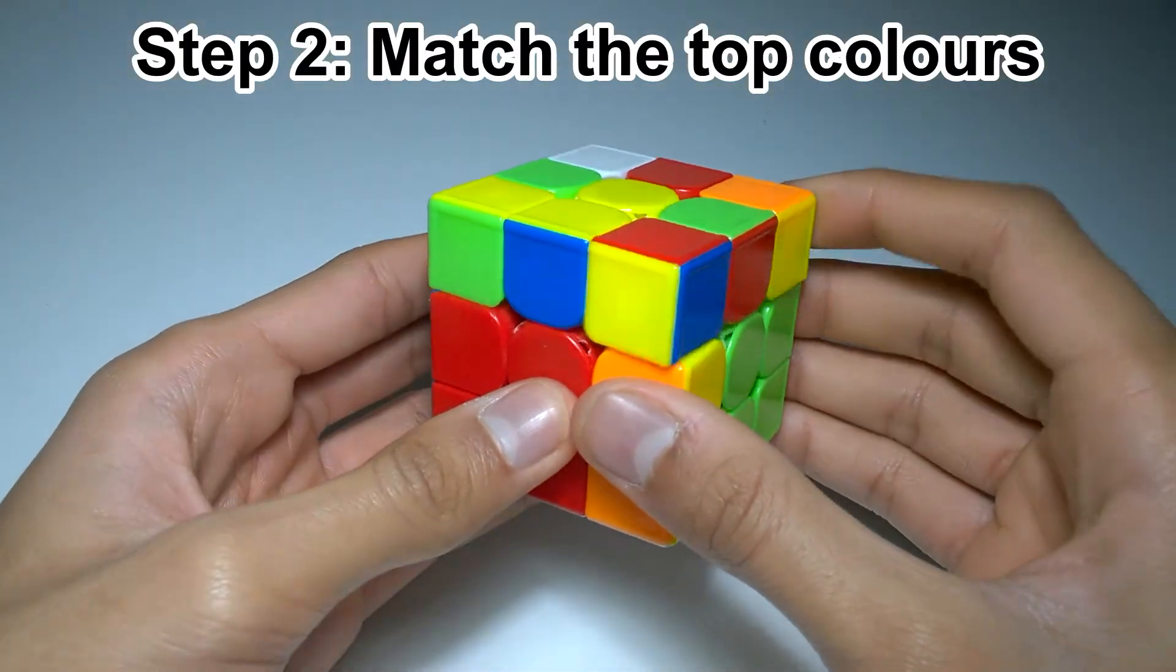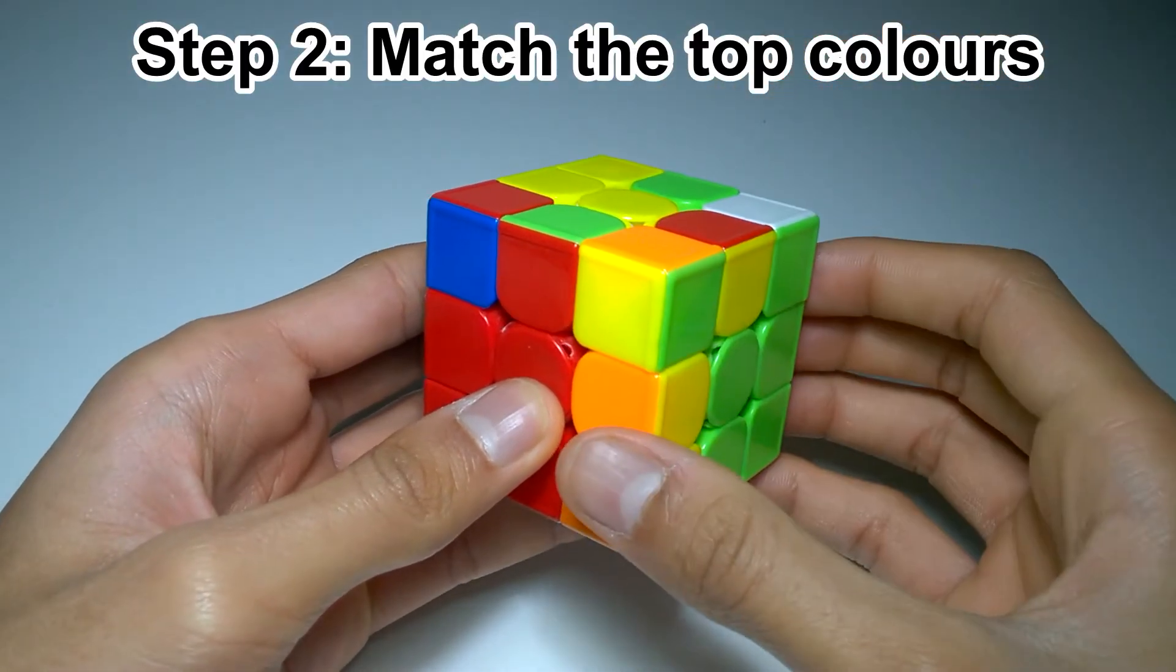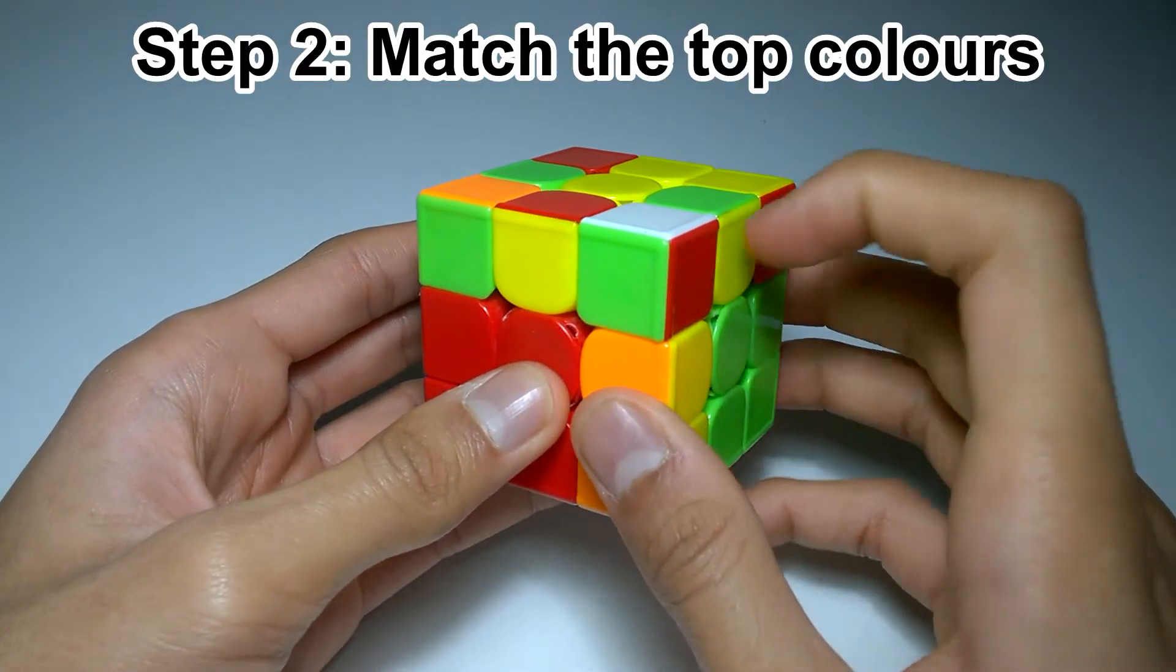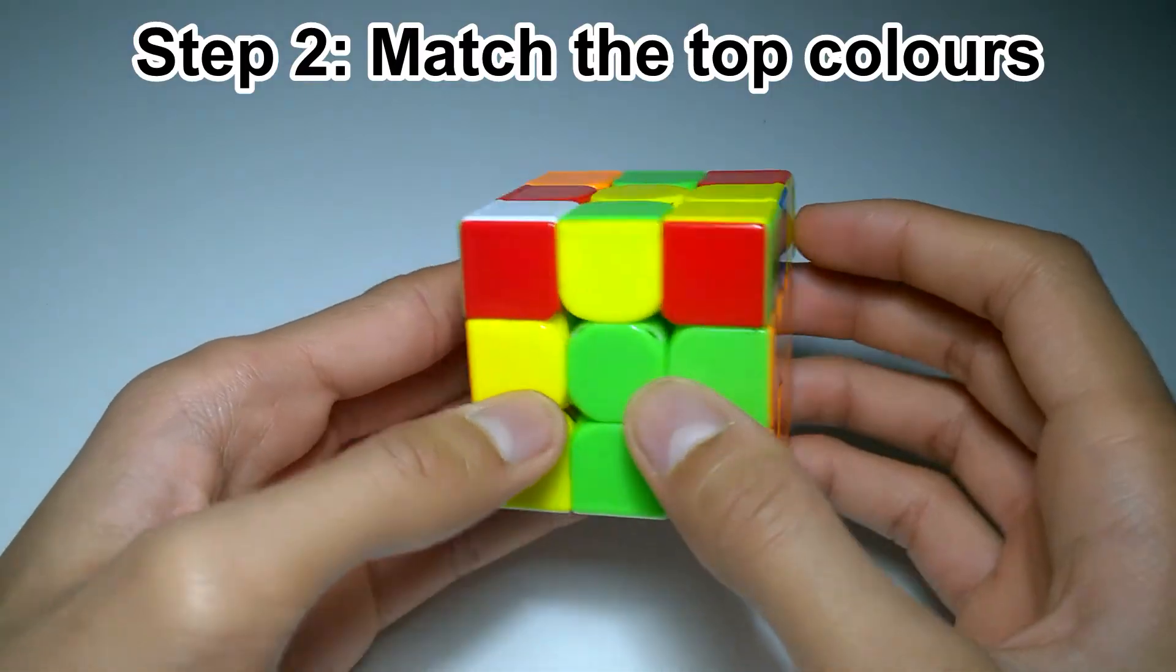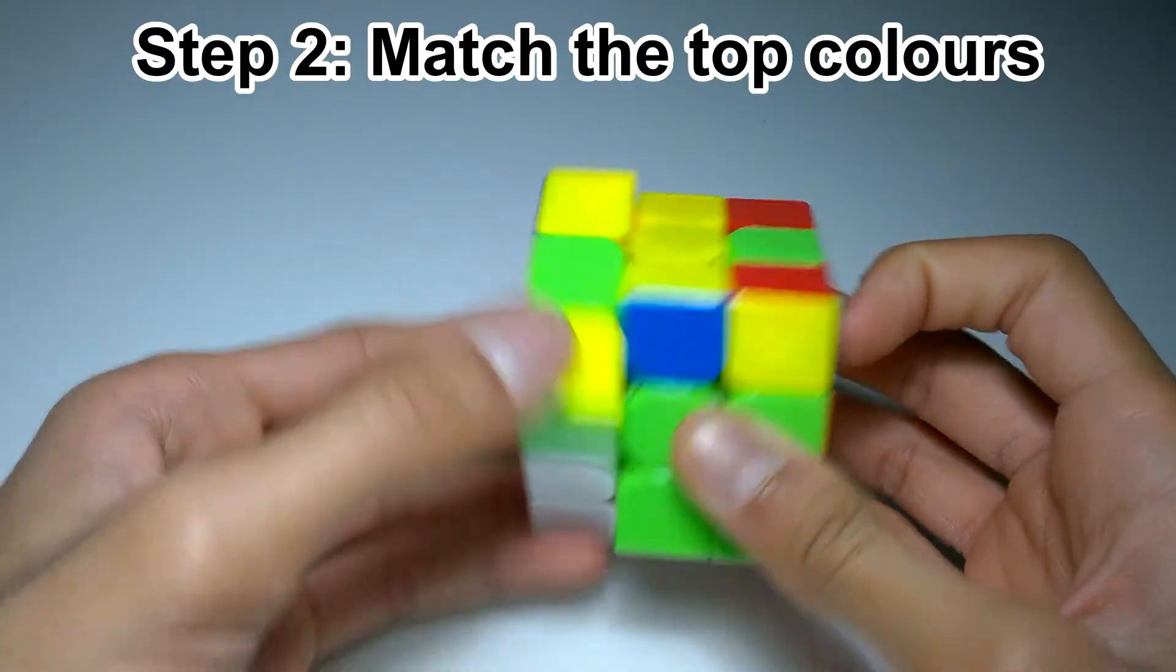Step two is to make the color at the top of the corner match the color at the top of the edge. You can usually change the color at the top of a corner by putting it above an unsolved slot, and doing one of the two algorithms. So in this case, we'll do L' U L.